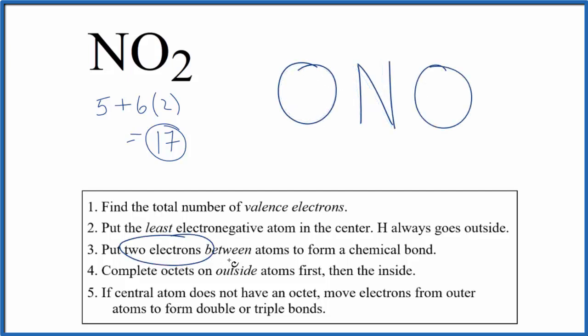Next, we're going to put a pair of electrons between the atoms to form the chemical bond. We've formed our covalent chemical bond. We've used 2, 4 of our valence electrons. Remember, we have 17.